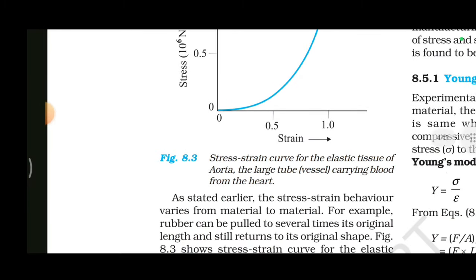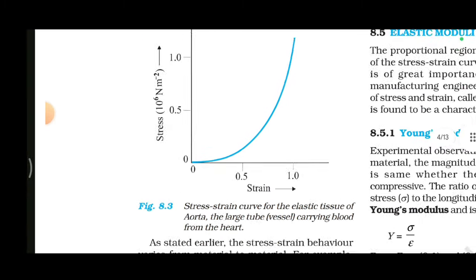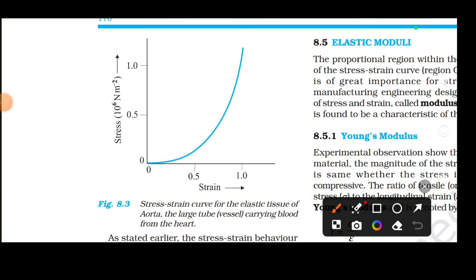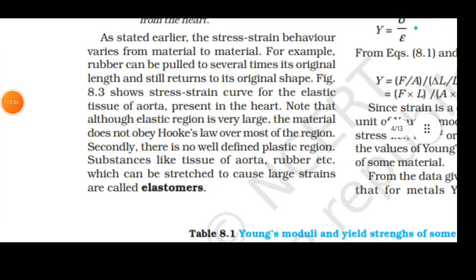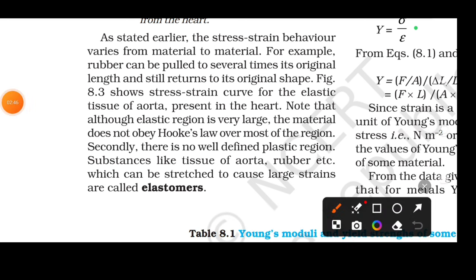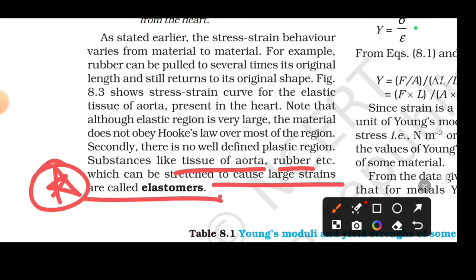Next: stress-strain curve for elastic tissue — the aorta. In our heart, the aorta carries oxygenated blood to all parts of the body. The aorta has a specific stress-strain curve for elastic tissue. Substances like the aorta and rubber, which can be stretched to cause large strains, are called elastomers.